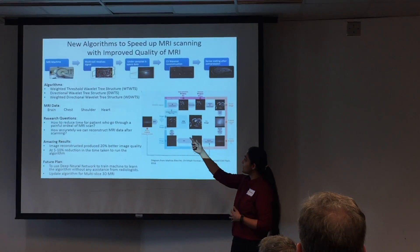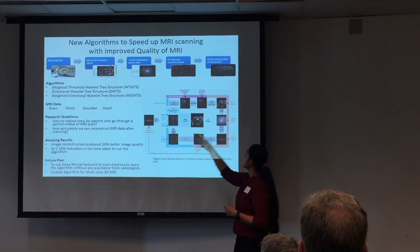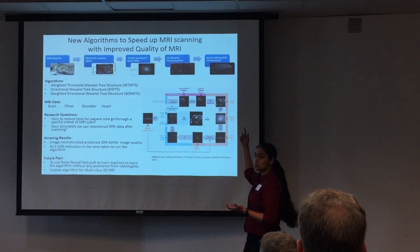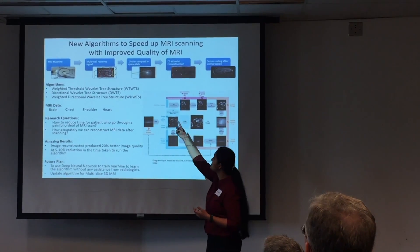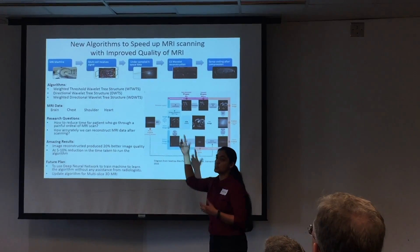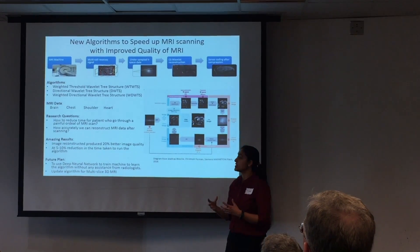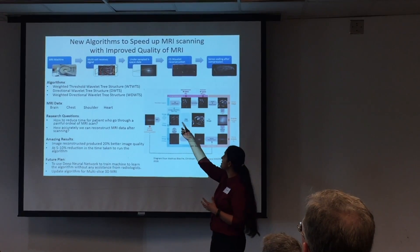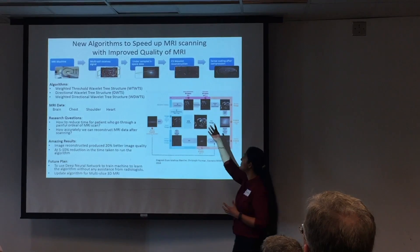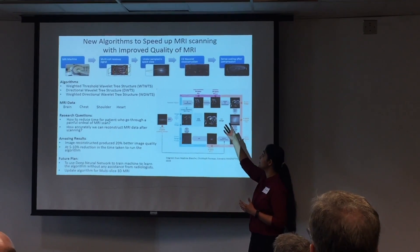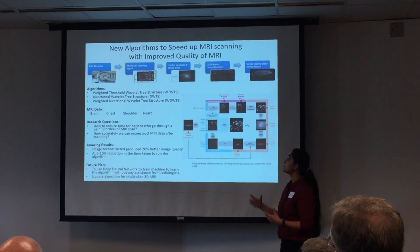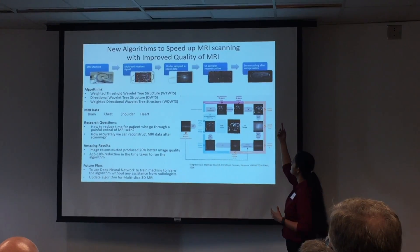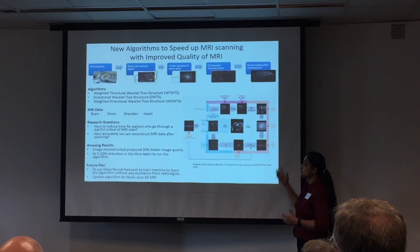Once the data is being captured, it's not directly the image that comes out of it. Actually, it is the K-space data which is being generated, and from the K-space data you have a couple of sections of wavelets which actually creates that data and gives us the MRI images.